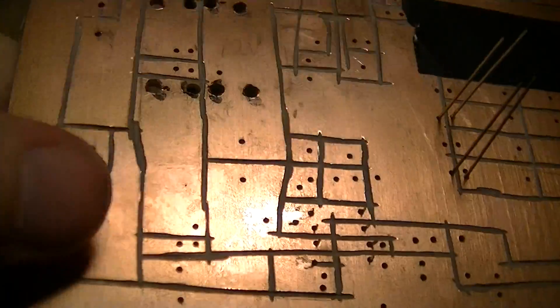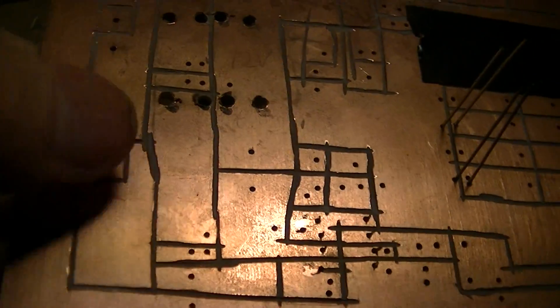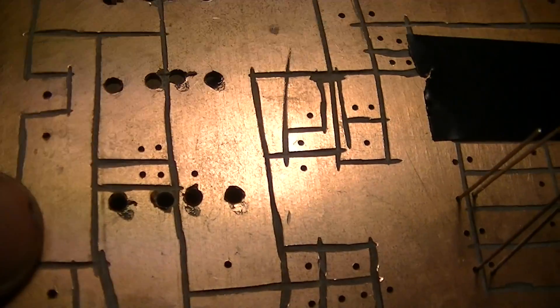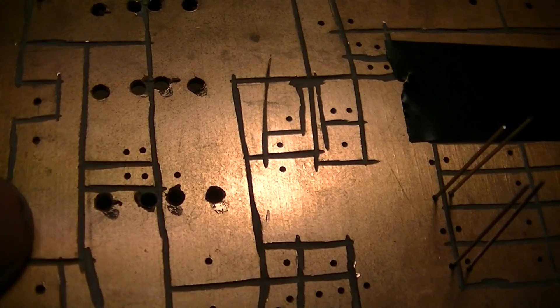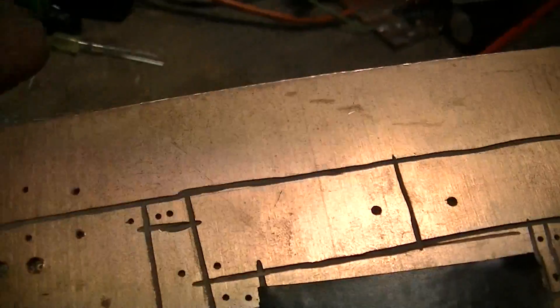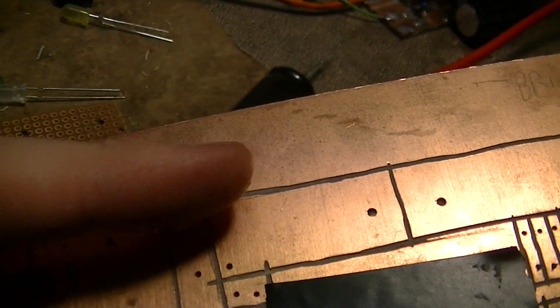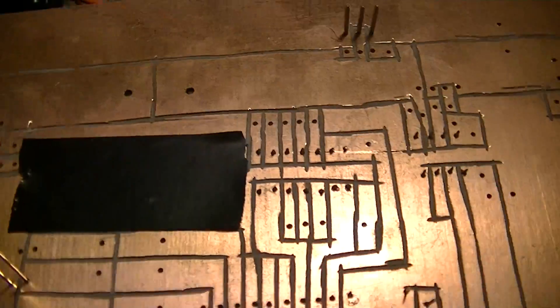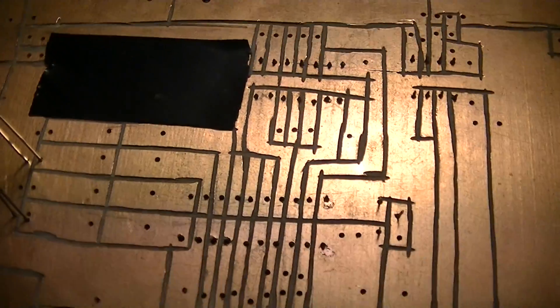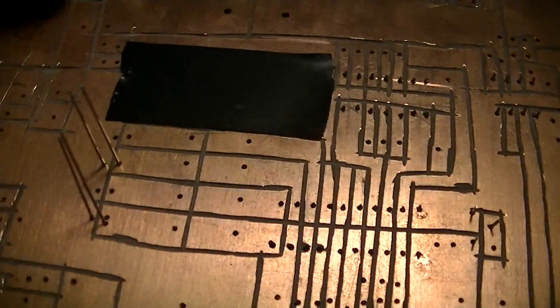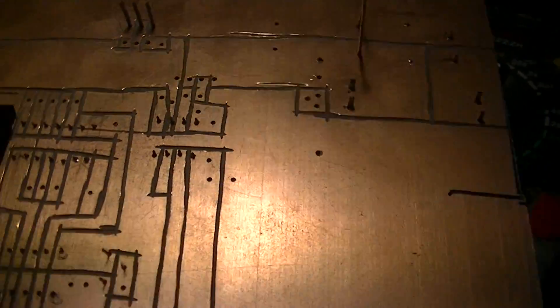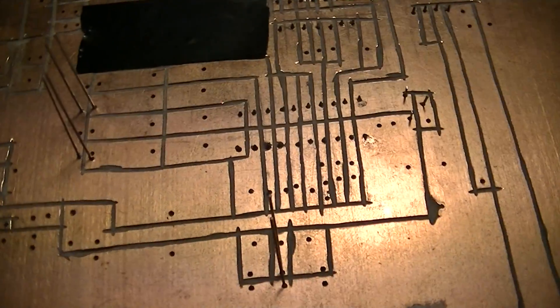Here are the spaces for the two AOD403 FETs for load control. One's going to be the dump load, one is the low potential disconnect. The anti-reverse current FET is going to be right up here. Other than that, I've got just space for random resistors and other passives. But it's getting there.